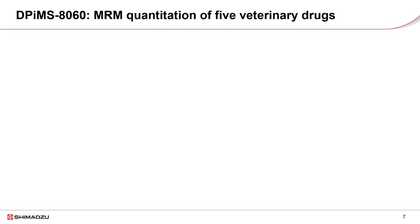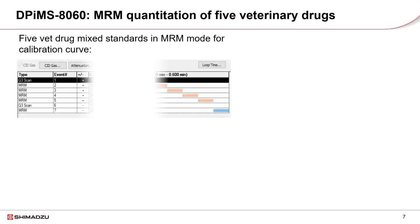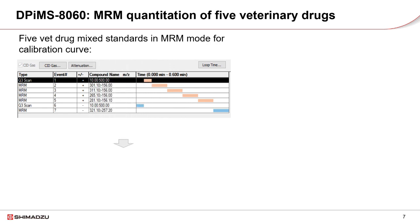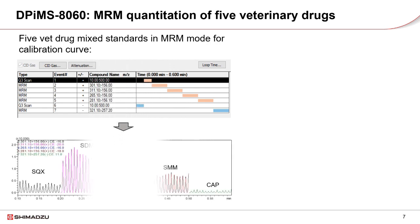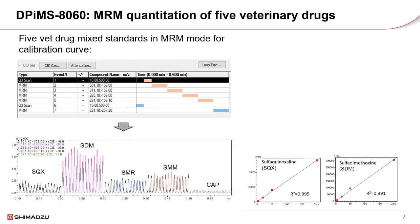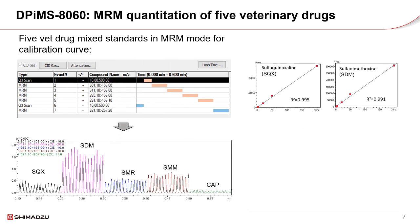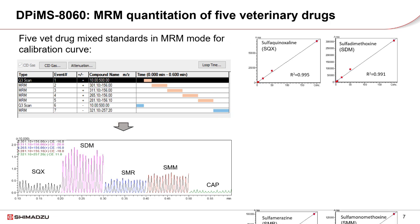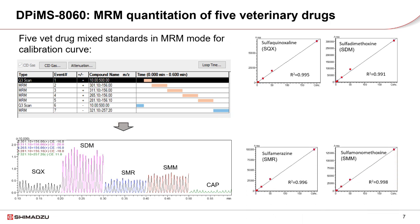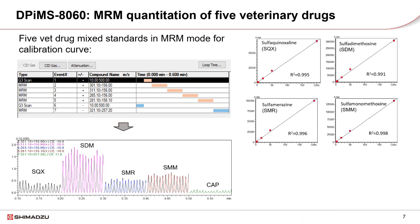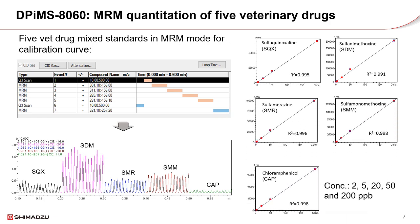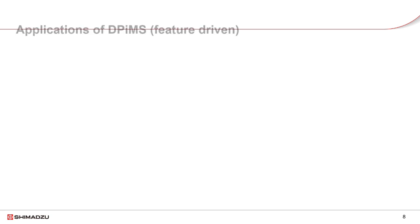DPI-MS is convenient for quantifying multiple analytes in samples. As an example, a mixed sample containing five veterinary drugs was analyzed with an MRM method. The results show linearity between 1 ppb and 50 ppb greater than 0.99 for every compound.